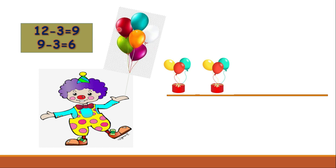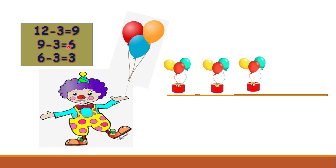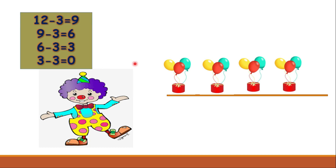Again he ties three more balloons from nine, and is left with six balloons. Nine minus three equals six. One more time he ties three more balloons from six, and now he has left with only three balloons. Six minus three is three.